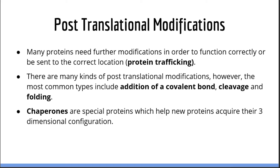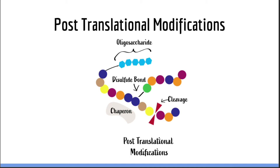Now let's talk about what happens after translation. Many proteins need further modification in order to function correctly or reach their intended destination. The main mechanism used by the body is to add special molecules via covalent modifications — we will discuss this at length in the next lecture on protein trafficking. The most common types of post-translational modifications include the addition of other molecules via covalent bonds, cleavage of certain parts of the protein, or folding using special proteins called chaperones. These modifications occur either in the endoplasmic reticulum or Golgi apparatus.